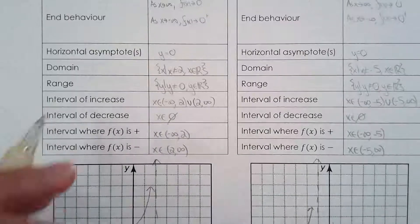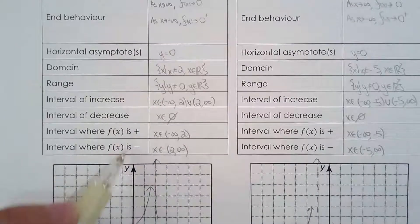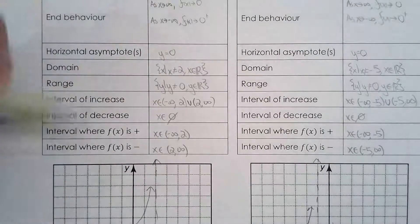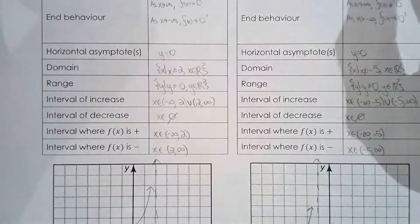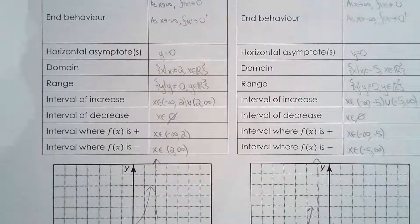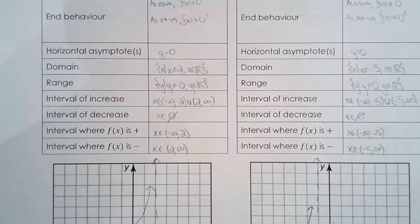Anyways, domain, range, interval of increase, decrease, where it's positive, negative. All this, the whole table can be easily filled in once you have the graph. So I highly recommend to draw the graph first and then fill in the table.